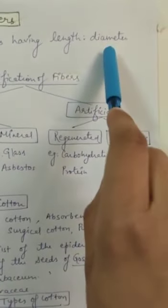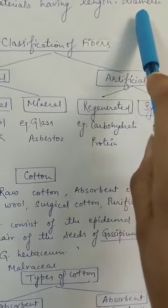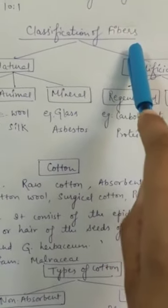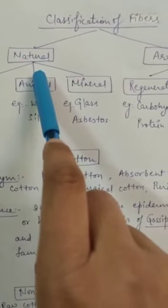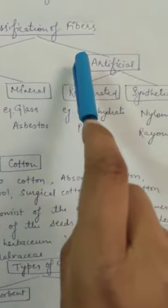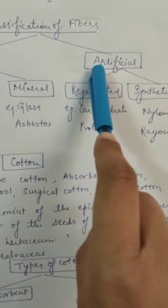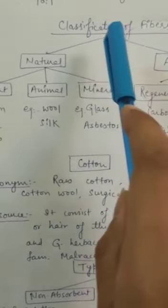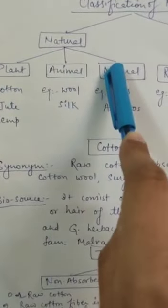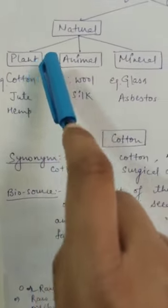artificial fibers. Natural fibers are those that we get from natural sources, like plant fibers, animal fibers, and mineral fibers.